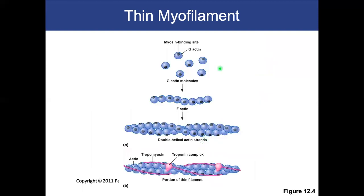The thin filament is actin — double helical globular G-actin strands where the black spots are the myosin-binding sites. However, tropomyosin, a sheath protein, sits on those myosin-binding sites so myosin can't bind. Attached to tropomyosin is a three-bead complex called troponin. So the thin filament is not just actin; it involves actin, tropomyosin, and troponin, all of which participate in contraction and relaxation.